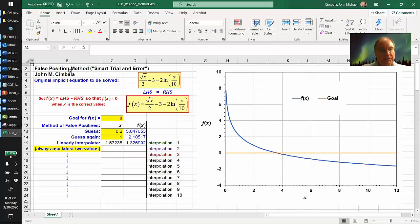I want to show you how to use the false position method in Excel to solve for some implicit equation for unknown X. I call this the smart trial and error method.